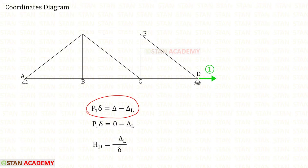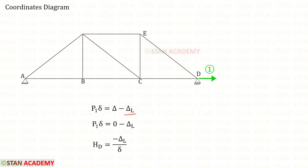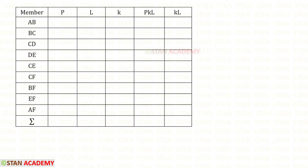This is the formula we are going to use to find HD. P1 only is HD, which we have released. Delta is the deflection due to unit load in the coordinate direction. Delta is the deflection due to external forces such as temperature changes. In this problem, nothing is mentioned about temperature changes or extension and reduction of members. In this case, for Delta, we can apply 0. Delta L is the deflection in the released structure due to the loads. For P1, we can apply HD. Finally, for HD, we will get this formula. We have to make a table. In the table, first we need to enter all of the members. P is the member forces in the released structure.